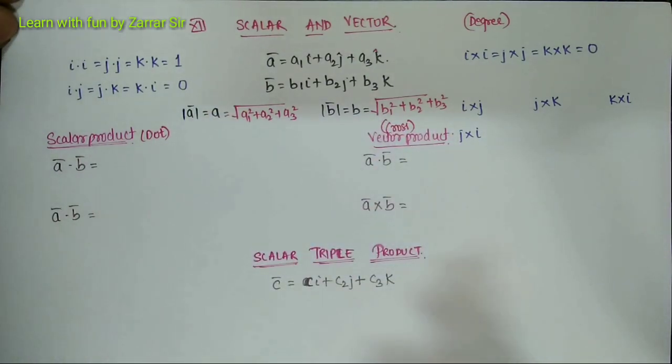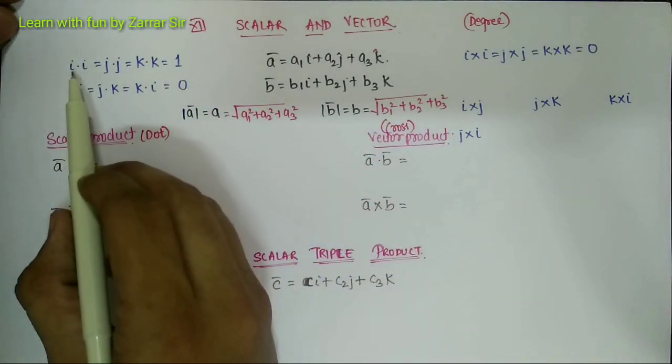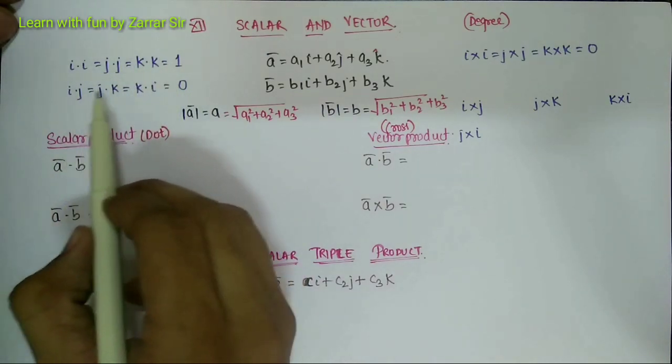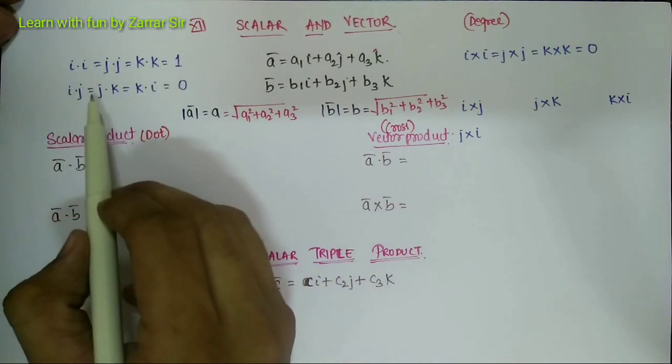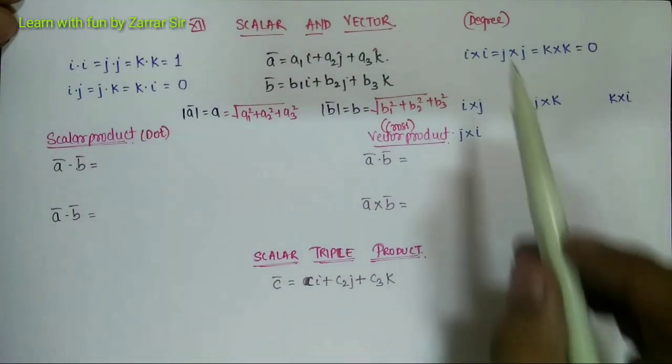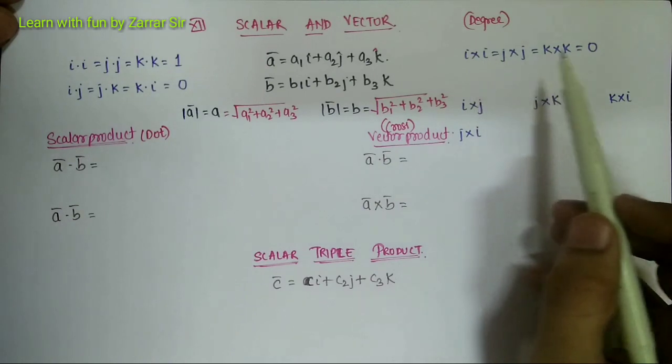Now guys, do remember this fundamental also: i bar dot i bar, j bar dot j bar, k bar dot k bar equal to one. Instead, if I replace i with j or j with k, it would be zero.